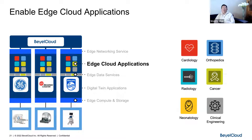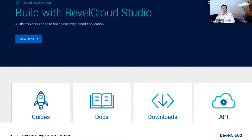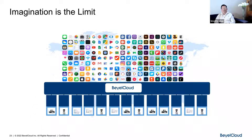The data is presented through edge data services to authorized edge cloud applications — in cardiology, scoliosis, orthopedics, or for clinical and biomedical engineers. All these applications are developed with what we call Bevel Cloud Studio, which contains all the APIs and quick-start guides. Every application I'm going to show you was developed using Studio. In our minds there are 3,000 possible applications of this architecture — I'm going to show you three.